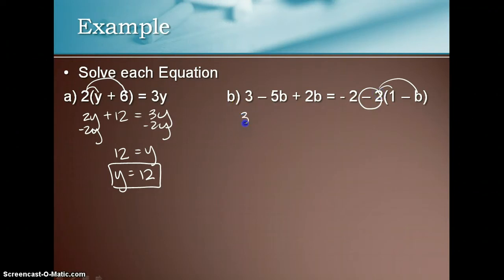So it's going to give us 3 minus 5b plus 2b is equal to negative 2 minus 1 plus 2b. Combine like terms. That gives us 3 minus 3b is equal to negative 3 plus 2b. And now it's like the last examples or the last set of videos.